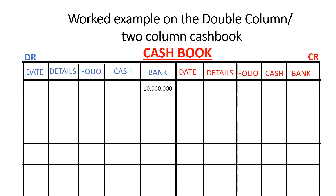The other account affected is capital, and this happened on 1st August. In this session, we are specifically looking at transactions taking place in the cash book. When you start with 10 million shillings in the bank, the two accounts affected are capital and the bank. We debit the bank account and credit capital, but we are not going to concentrate on that now.